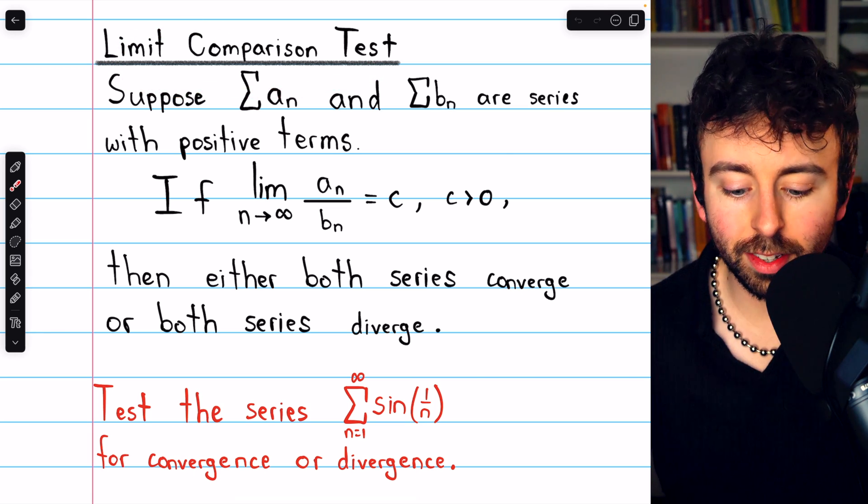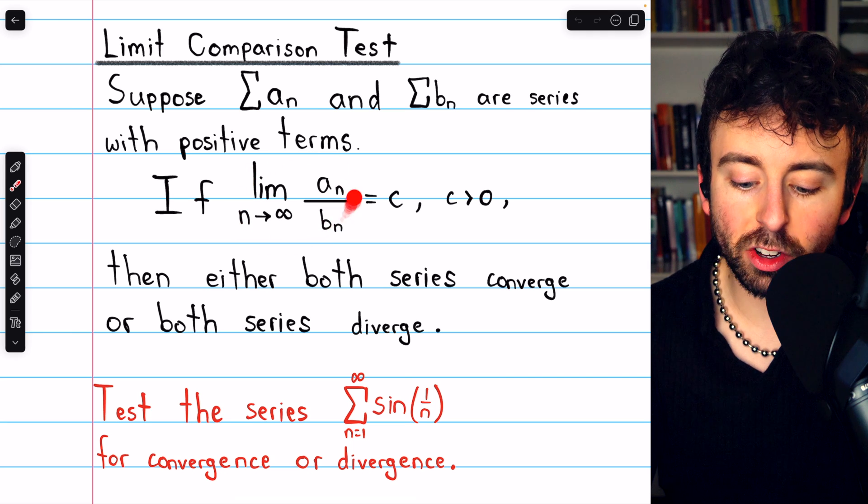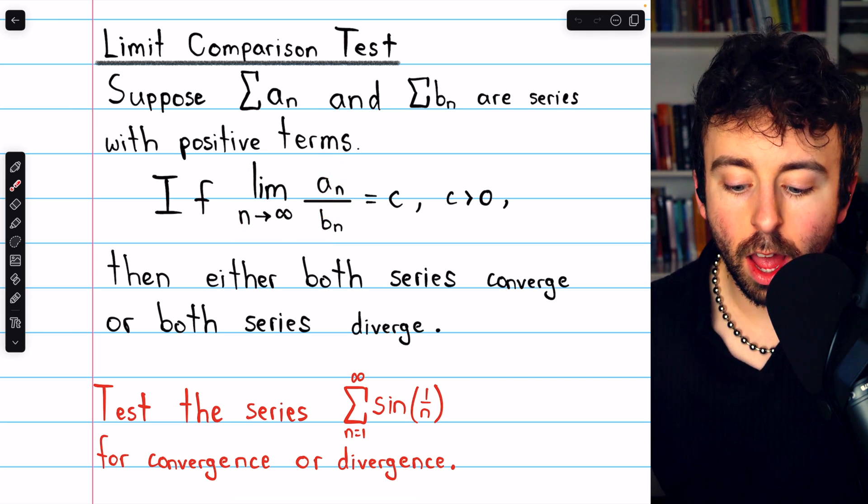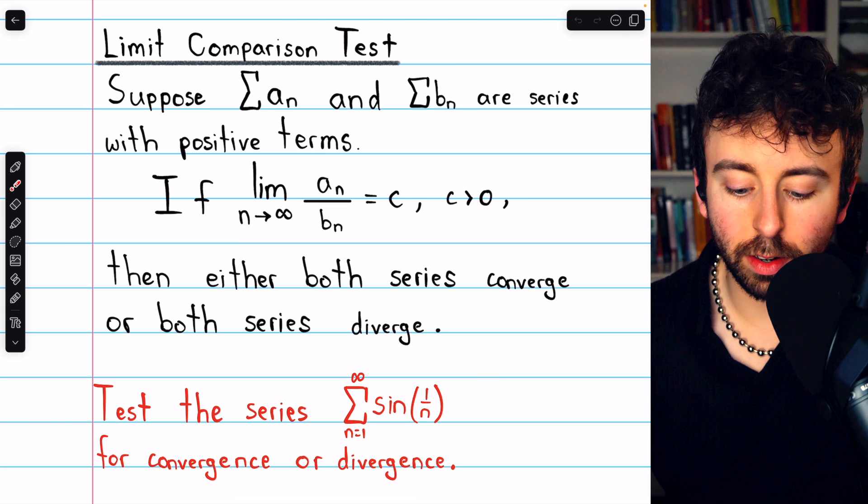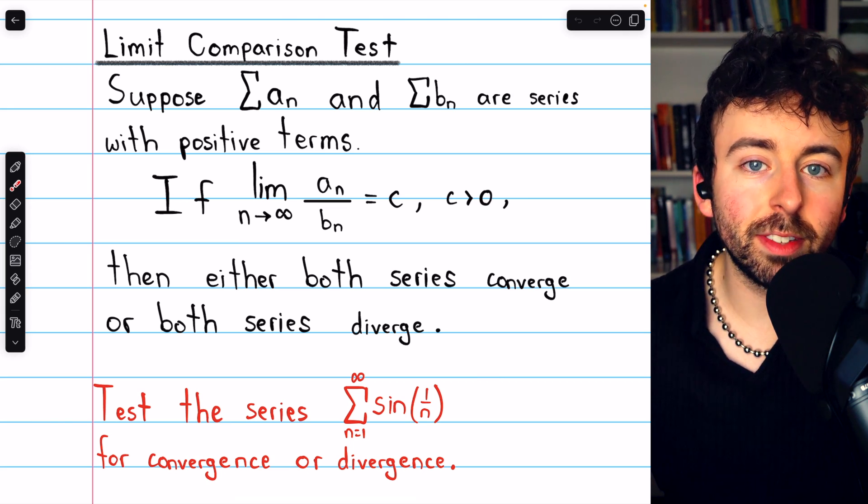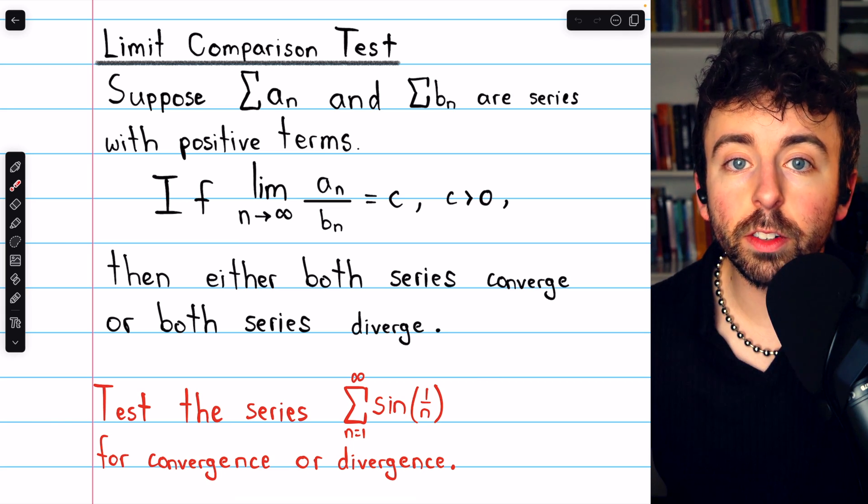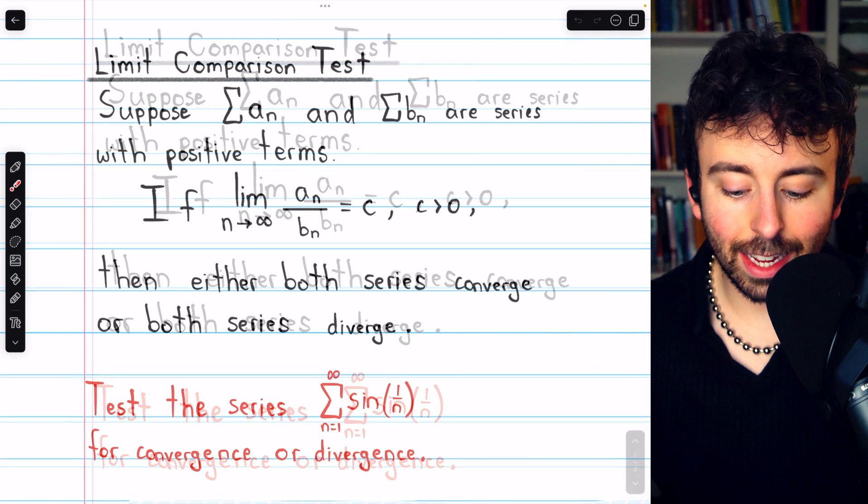and we'll do it using the limit comparison test. The limit comparison test says that if the limit of the ratio of the terms of two series approaches a finite positive number, then the series must have the same behavior, either they both converge or they both diverge.